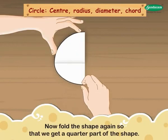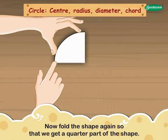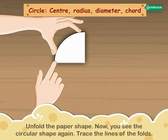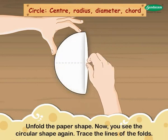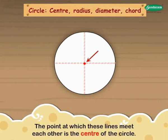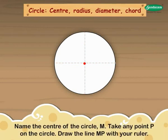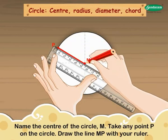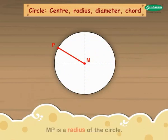Now fold the shape again so that we get a quarter part of the shape. Unfold the paper shape. Now you see the circular shape again. Trace the lines of the folds. The point at which these lines meet each other is the center of the circle. Name the center of the circle M. Take any point P on the circle. Draw the line MP with your ruler. MP is the radius of the circle.